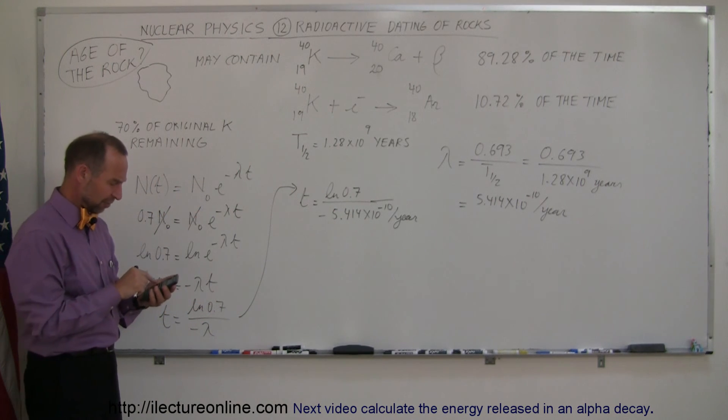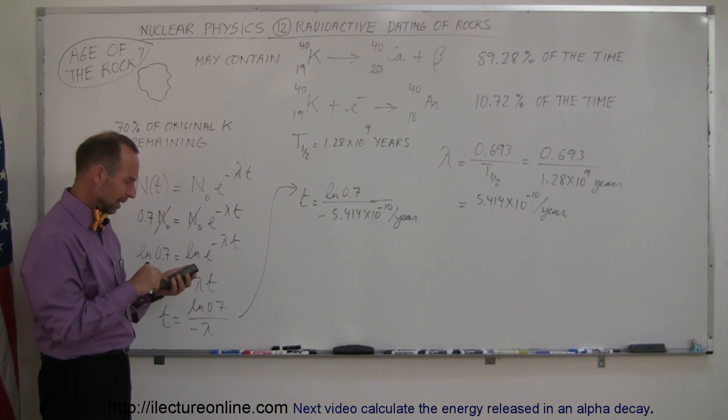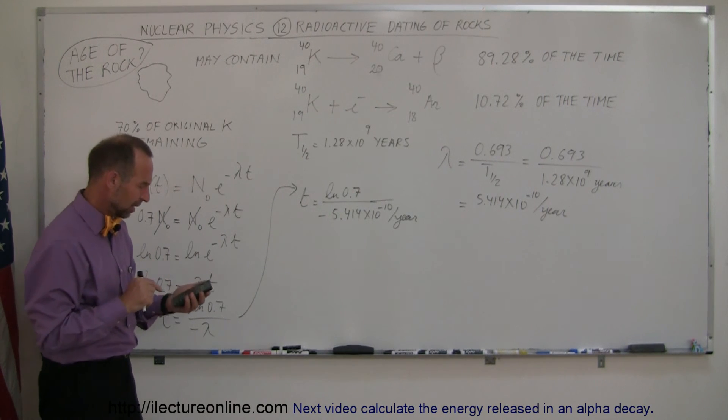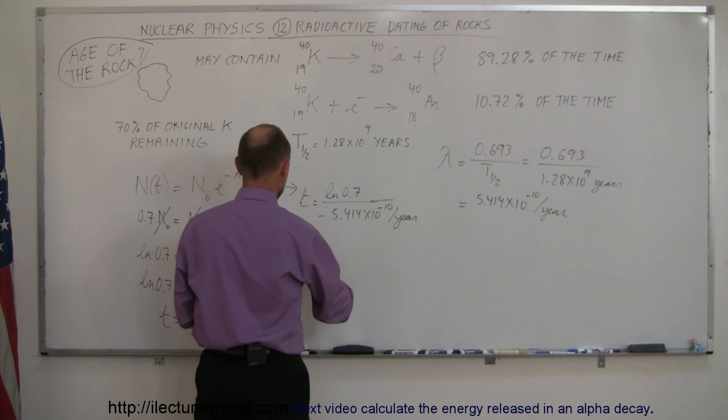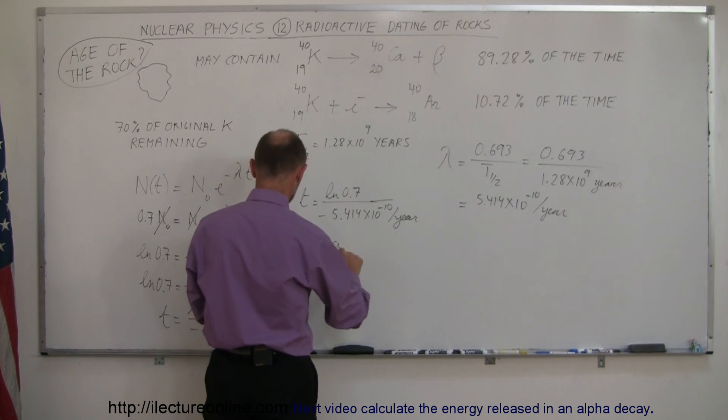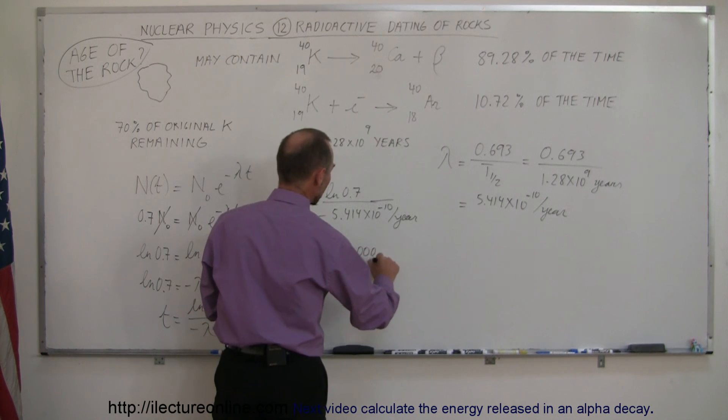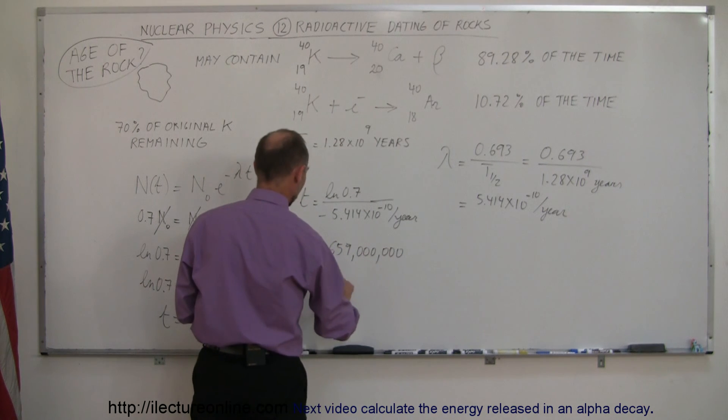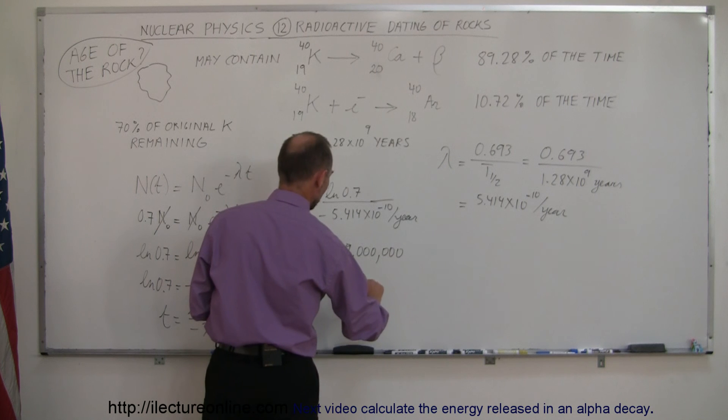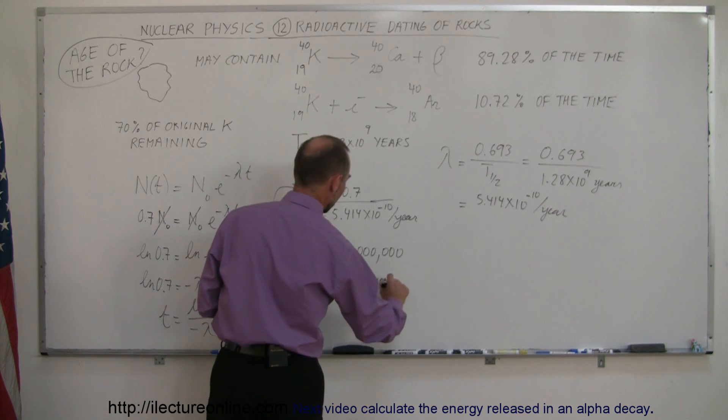So take the inverse of that, and then multiply that times 0.7, take the natural log of that, equals - and t is equal to 659 million years.